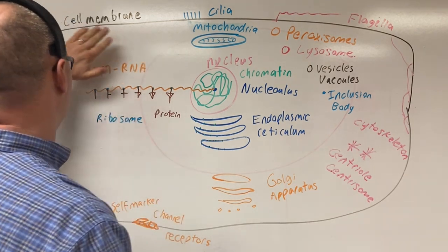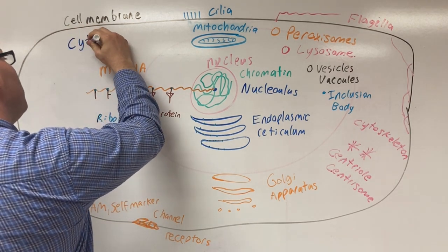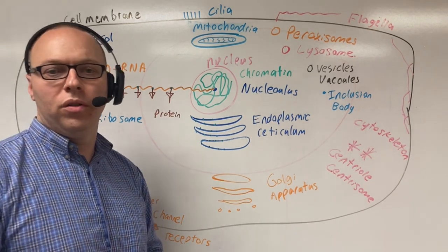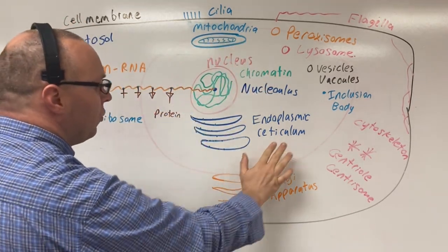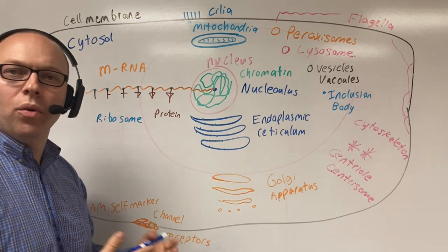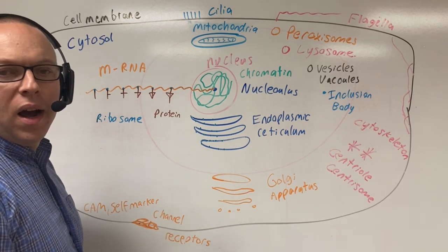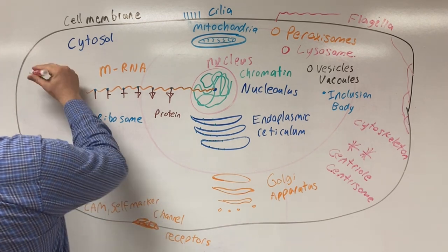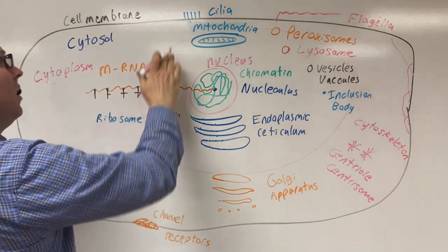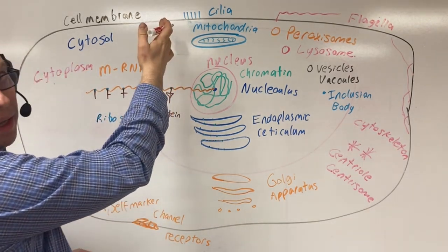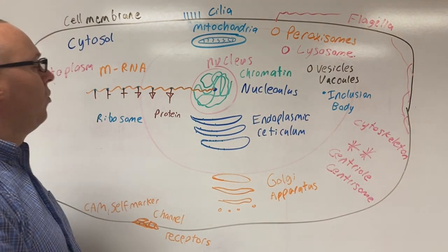Next, you'll notice blank space in the cell — this blank space is your cytosol, the liquid part of your cell. Everything between the cell membrane and the outer boundary is going to be cytoplasm.